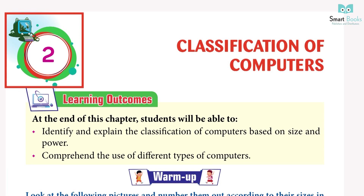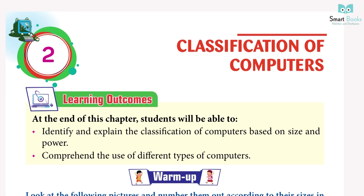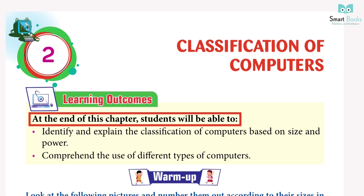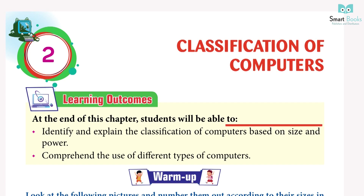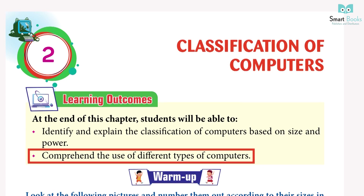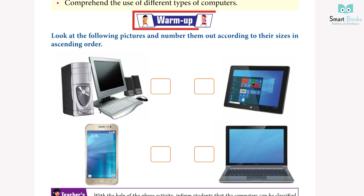Chapter 2: Classification of Computers. Learning outcomes: at the end of this chapter, students will be able to identify and explain the classification of computers based on size and power, and comprehend the use of different types of computers.